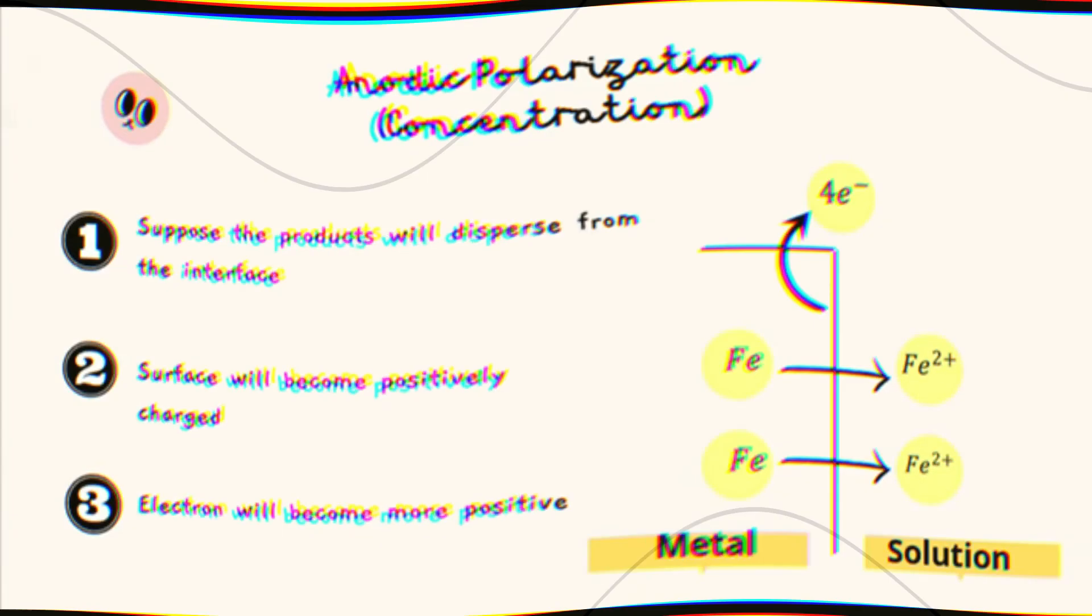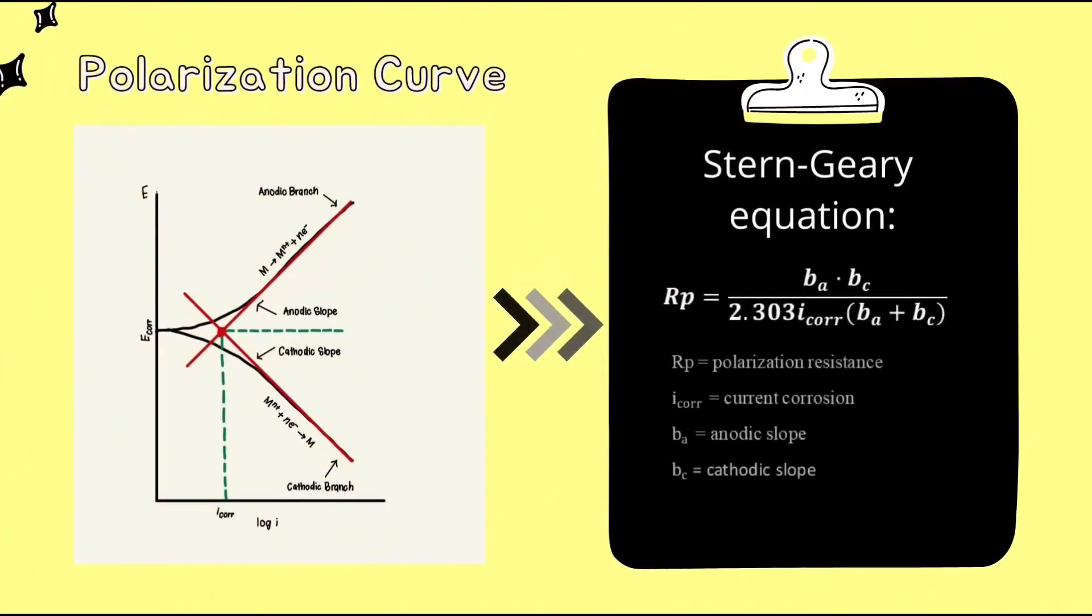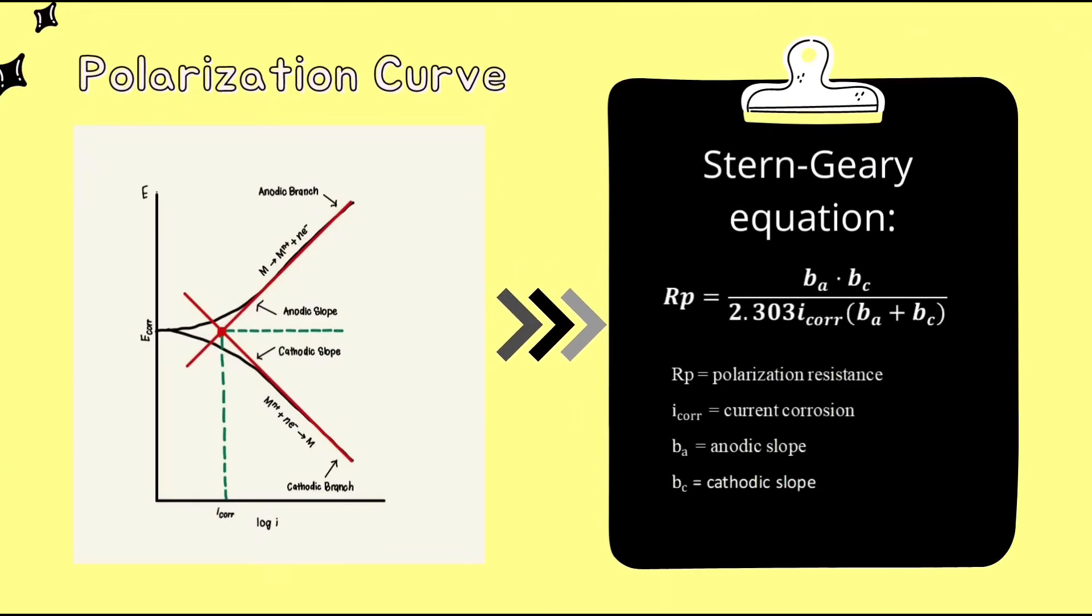In this polarization curve, the anodic slope is above the corrosion potential, and the cathodic slope is below it. The corrosion rate is calculated using the Stern-Geary equation. The higher the RP value, the greater the corrosion resistance.